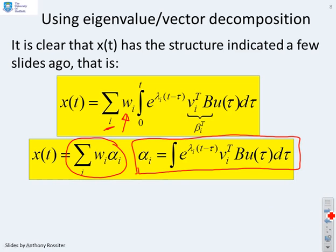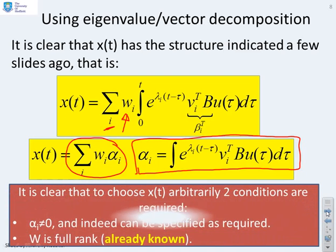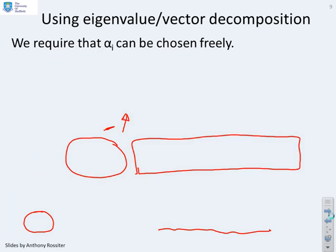So now I've got x(t) in the form that I want. So as long as I can choose these αᵢ as I please, then I can always make x(t) any value that I like. So it's clear that to choose x(t) arbitrarily, we need to satisfy two conditions. First of all, αᵢ has got to be not equal to zero and we've got to be able to specify it however we want, and we need to know that W is full rank, but we're assuming that from the eigenvalue eigenvector decomposition.